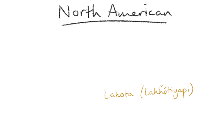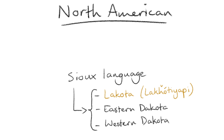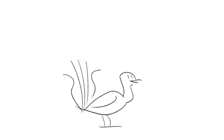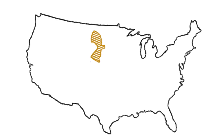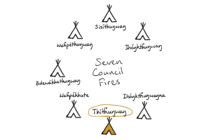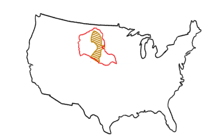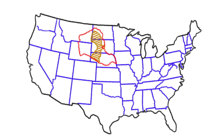Lakota, or Lakotia, is a North American language, being one of three major varieties of the Sioux language, along with Eastern and Western Dakota, and part of the Dakotan branch of the Siouxan language family. It is traditionally spoken by the Lakota people, who belong to one of the Seven Council Fires, or Otsi Shagowin, located in basically the central parts of the Great Sioux Nation, most generally spanning the western sides of the states of northern South Dakota in the USA.